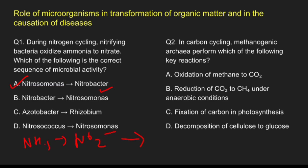Question 2: In carbon cycling, methanogenic archaea perform which key reaction? Option A, oxidation of methane to carbon dioxide; Option B, reduction of carbon dioxide to methane under anaerobic conditions; Option C, fixation of carbon in photosynthesis; Option D, decomposition of cellulose to glucose. The correct answer is option B. This is done with the help of methanogens like Methanobacterium, which reduce carbon dioxide along with hydrogen to form methane in strict anaerobic habitats like sediments and the rumen.